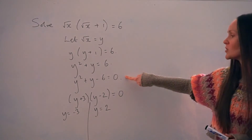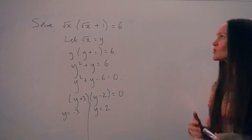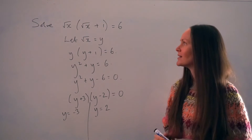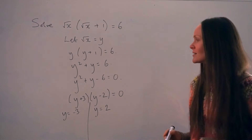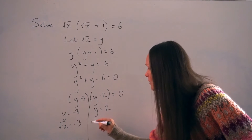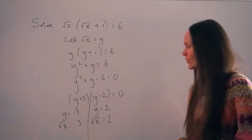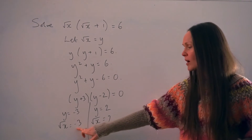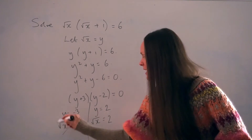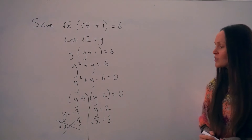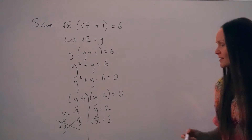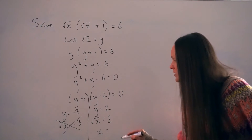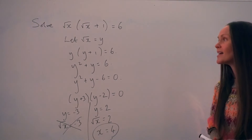We've solved the quadratic to find the values of y, but remember you're trying to find values of x. You made that substitution at the beginning, so remember to swap back at the end. y is actually equal to root x. So this gives us root x equals negative 3, and root x equals 2. Now, if you're square rooting a number you can't get a negative result, so the equation root x equals negative 3 has no solutions. But root x equals 2 is acceptable since it's a positive result. To get rid of the square root symbol, square both sides: x equals 4. So for this question there's only one solution.